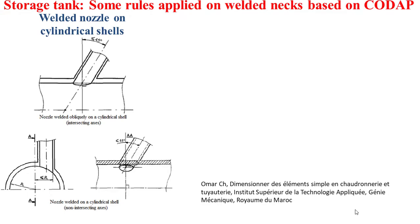There are rules that apply to welded nozzle necks. When the nozzle neck is welded on a cylindrical shell, the inclination of the nozzle neck should not exceed 45 degrees. Additionally, when the nozzle neck axis does not intersect the axis of the cylindrical shell, a maximum offset distance equal to the internal radius RI of the cylindrical shell must be taken into consideration, as depicted in the figure.